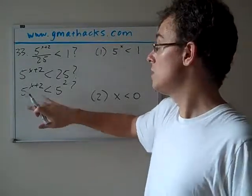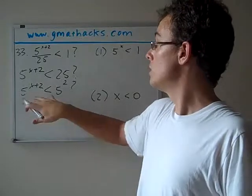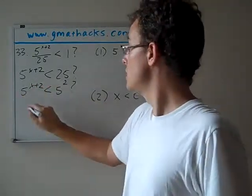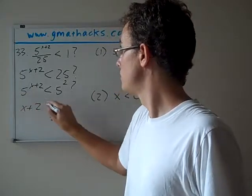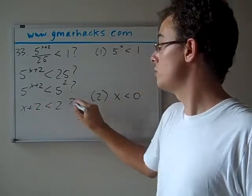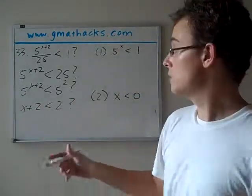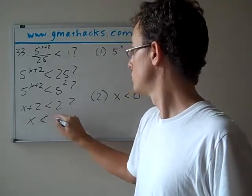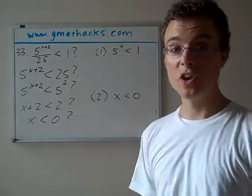So if 5 to the x plus 2 is going to be less than 5 squared, that means that x plus 2 is less than 2. Again, we keep the question mark and we go one more step, subtract 2 from both sides, is x less than 0.